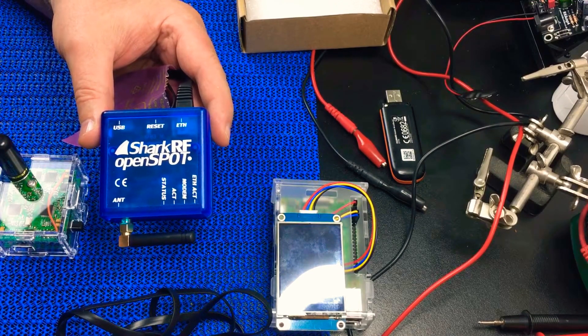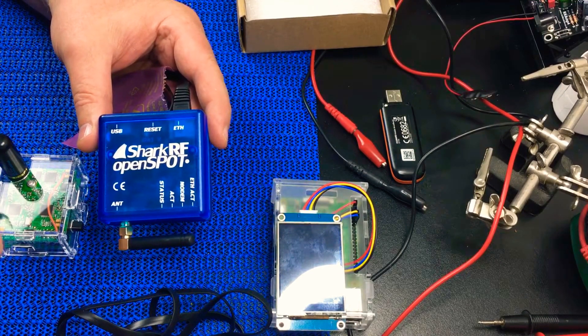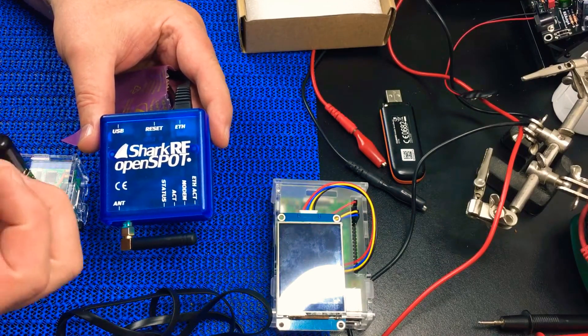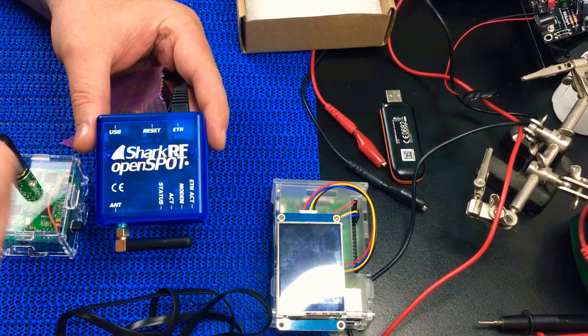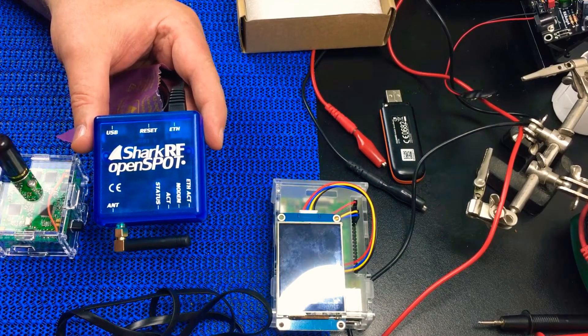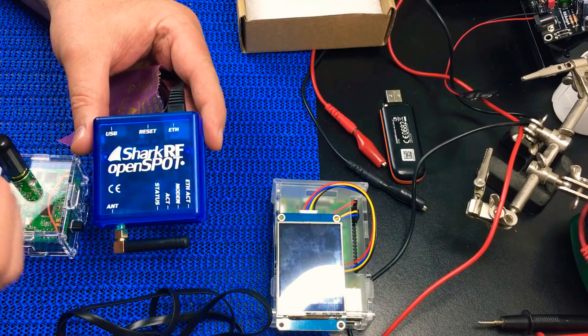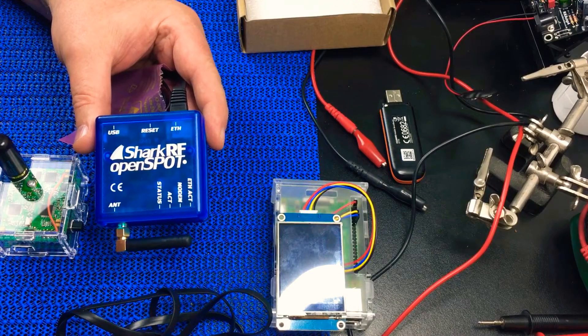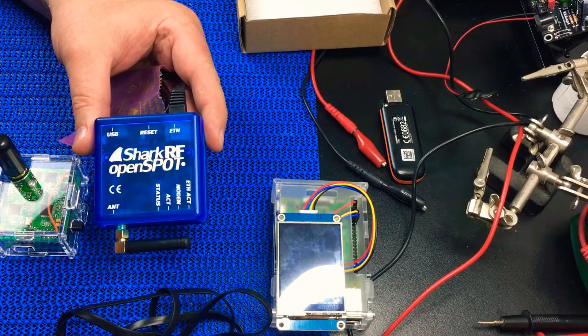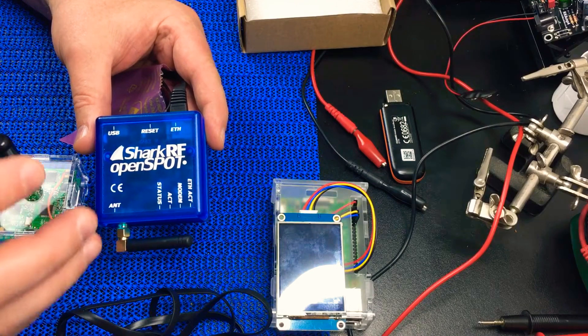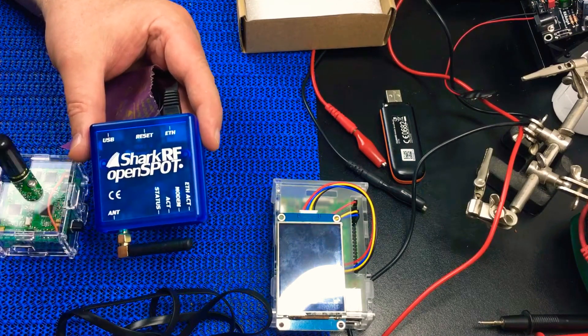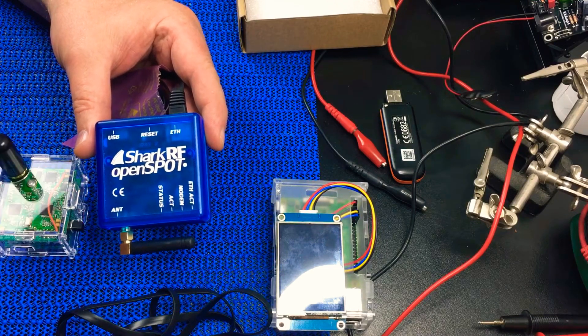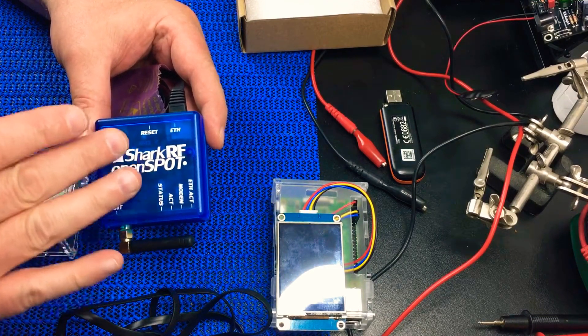Some routers, whether it be TalkTalk, BT Internet, whatever it might be, have their WiFi put on something like a guest network. What that means is that it's on a different domain or different IP string. So for instance, you might have 192.168.2.1 as the typical IP for WiFi, but on your wired connection it might actually be 192.168.1.1, which is a completely different level.